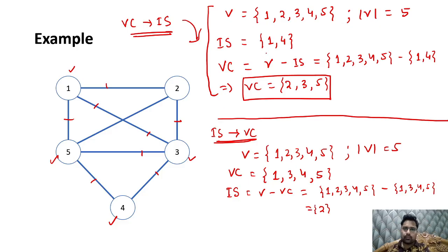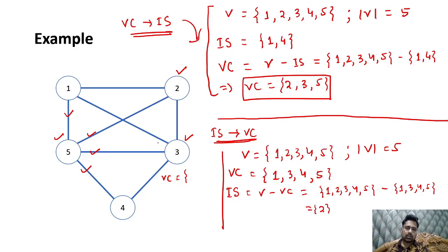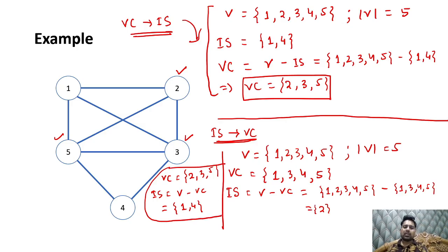If you are taking vertex cover as {2, 3, 5} — this is the minimum vertex cover. Node 5 will cover this edge, node 3 will cover this edge, and node 2 will cover all the remaining edges. So vertex cover is {2, 3, 5}. Then V minus VC = {1,2,3,4,5} minus {2,3,5} = {1, 4}. This gives us the maximum independent set of {1, 4}. And for maximum vertex cover we get minimum independent set. That's it.